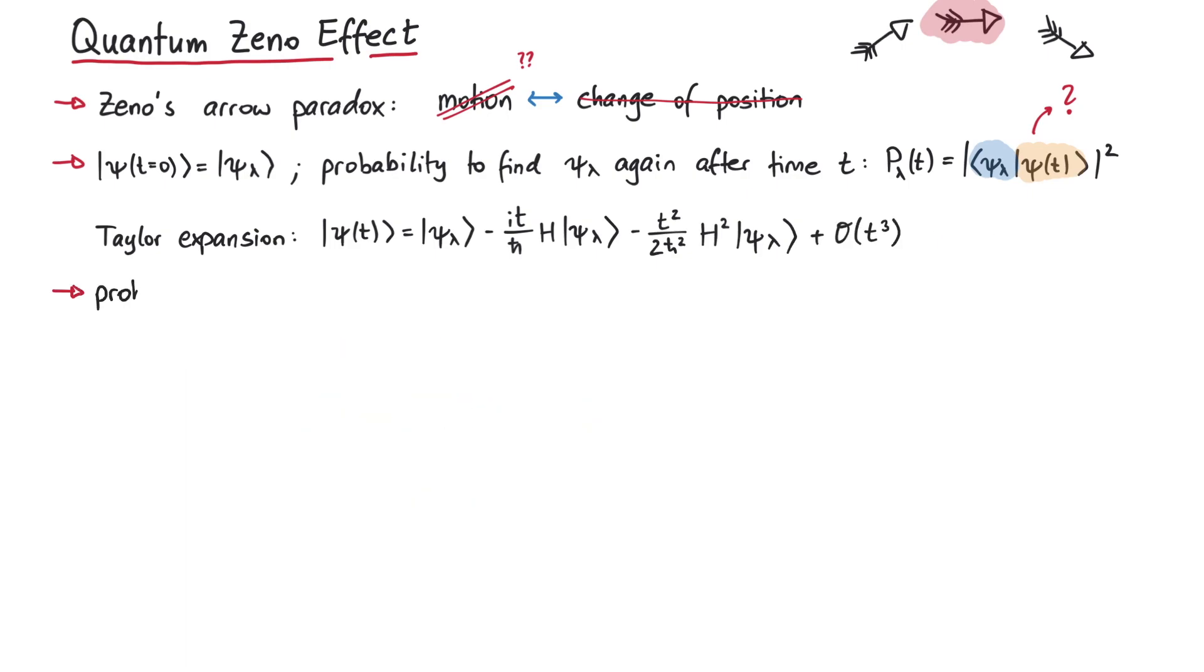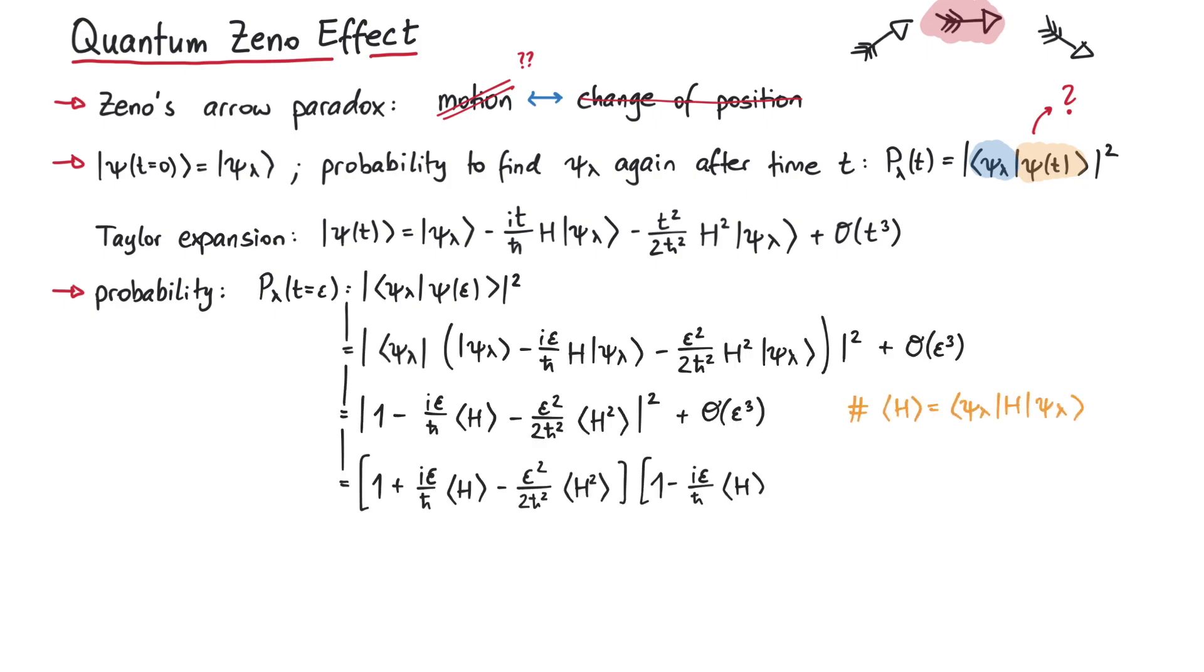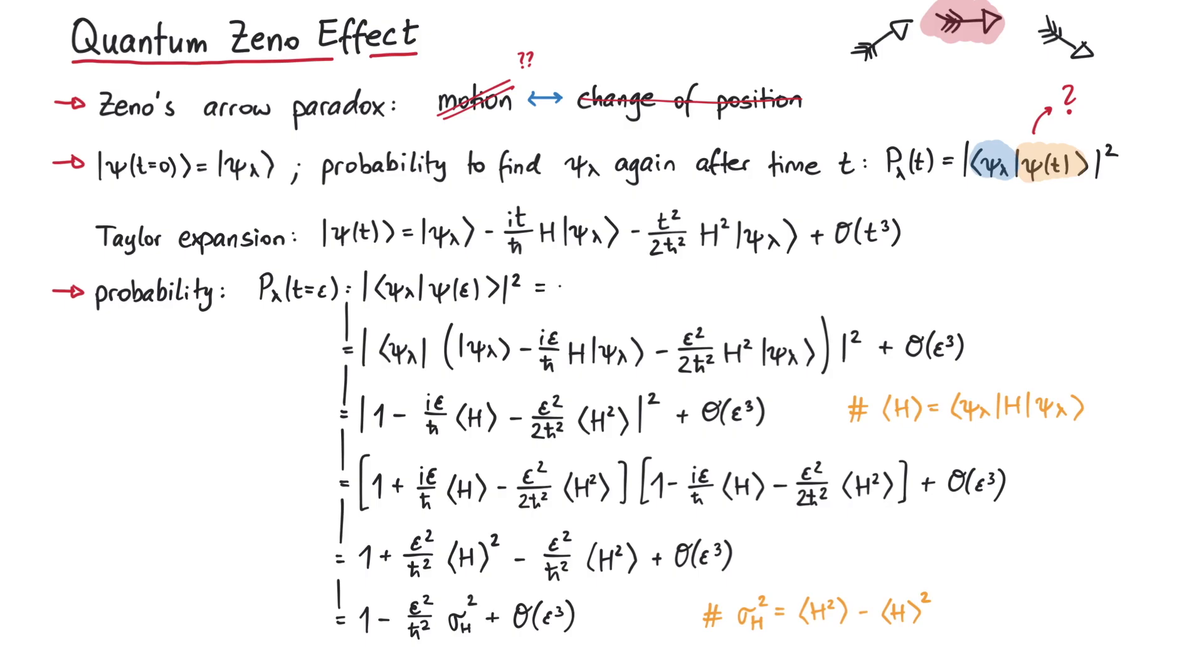After doing this Taylor expansion, we can now explicitly calculate the probability that the system is still in the initial state psi lambda after some short time epsilon. This calculation is not too difficult and results in 1 minus epsilon squared over h-bar squared times the variance of the energy of the system plus higher order terms.